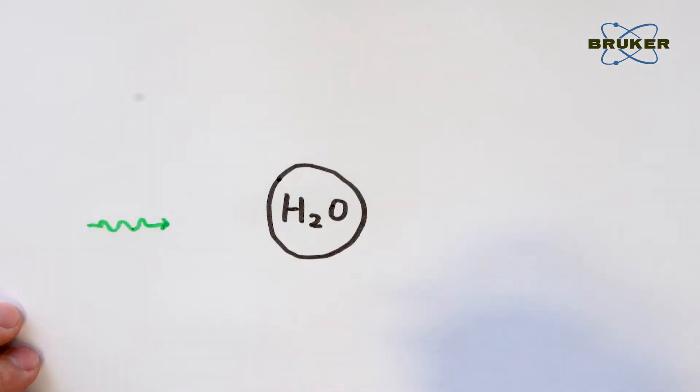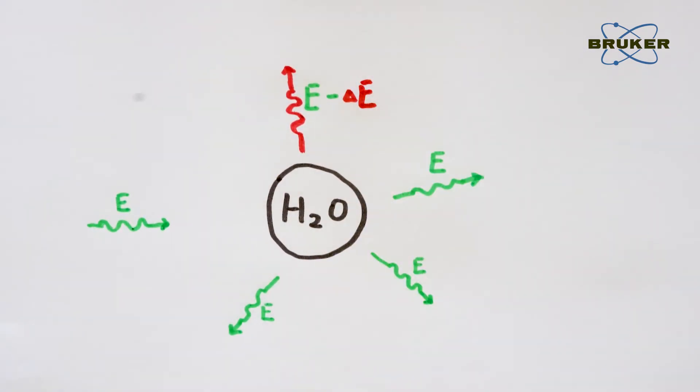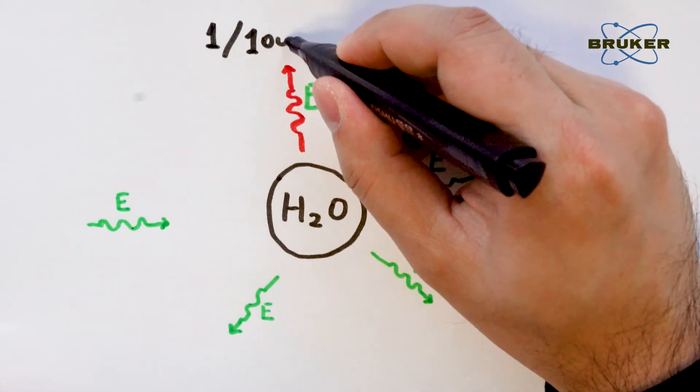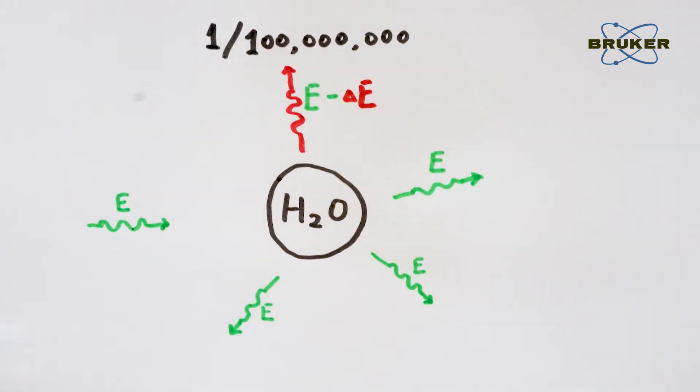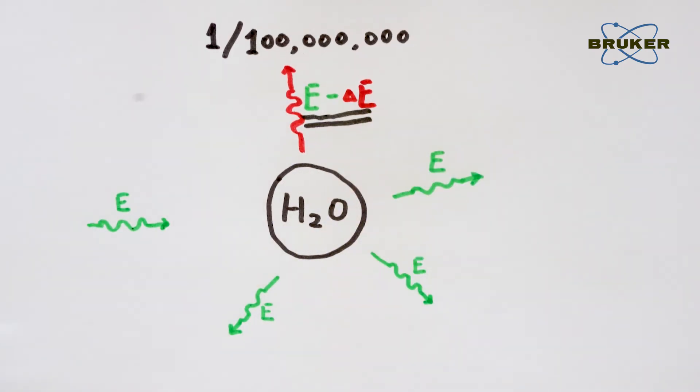When light scatters, the wavelength of the light and thus its energy can be altered by the scattering process. With a very small chance, 1 in 100 million scattered photons loses energy to the molecule and changes its wavelength.